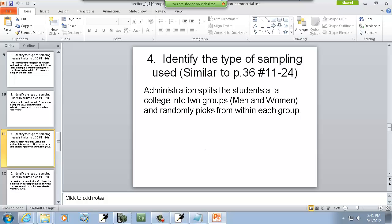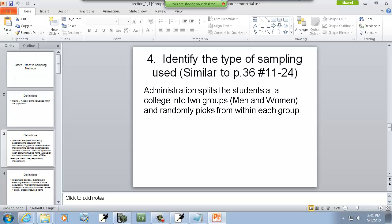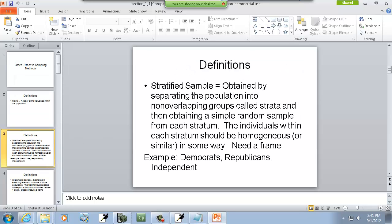Okay. Administration splits students at a college into two groups, men and women, and randomly picks from within each group. Okay, that's where they're actually splitting them into two groups and randomly picking from within each group. So stratified, split them into groups and randomly picking within those groups. So that's a stratified sample.